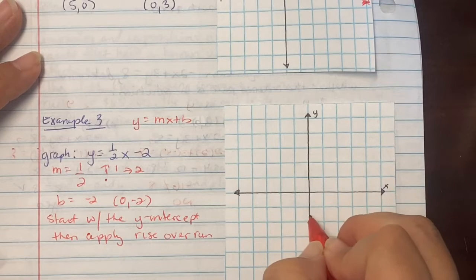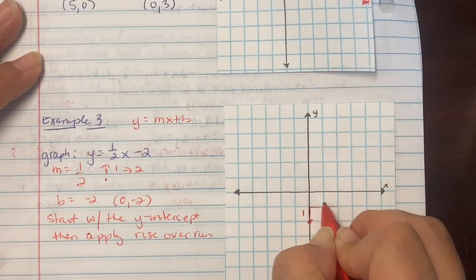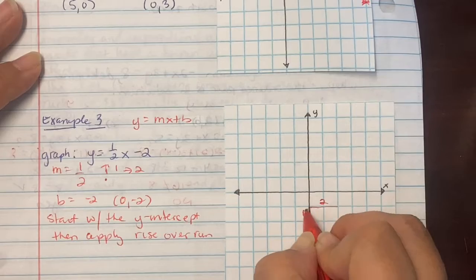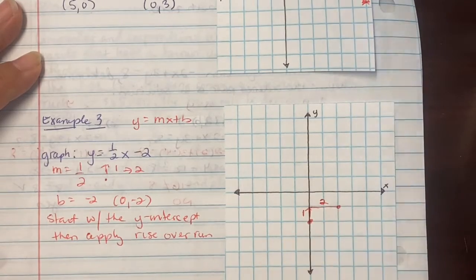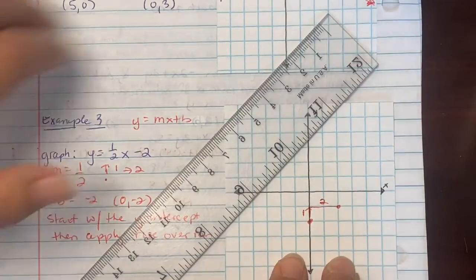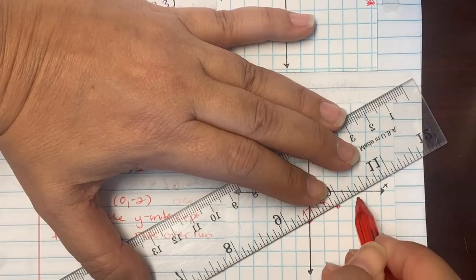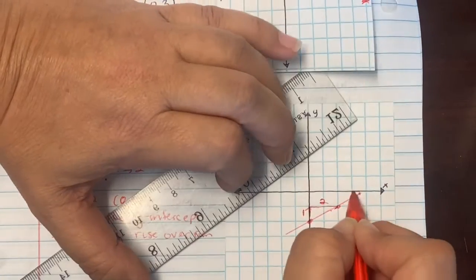So we're going to start with that -2 on the y axis. You're rising one step and to the right 2. So we went up 1 over 2. Plot your new point. Connect your dots using graph line. Make sure you have arrows on the end.